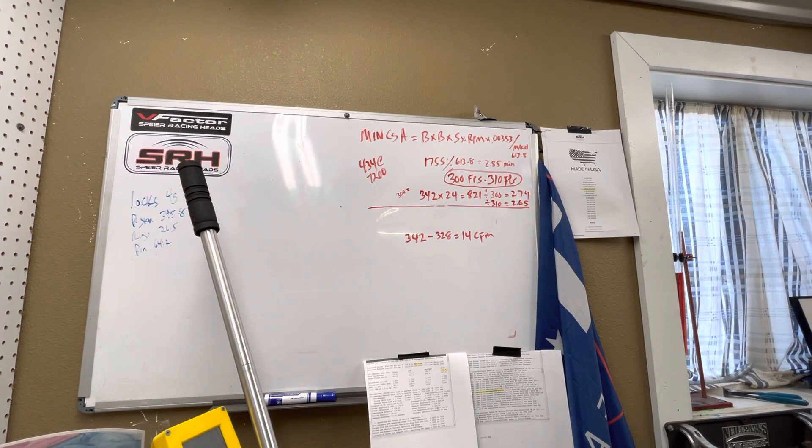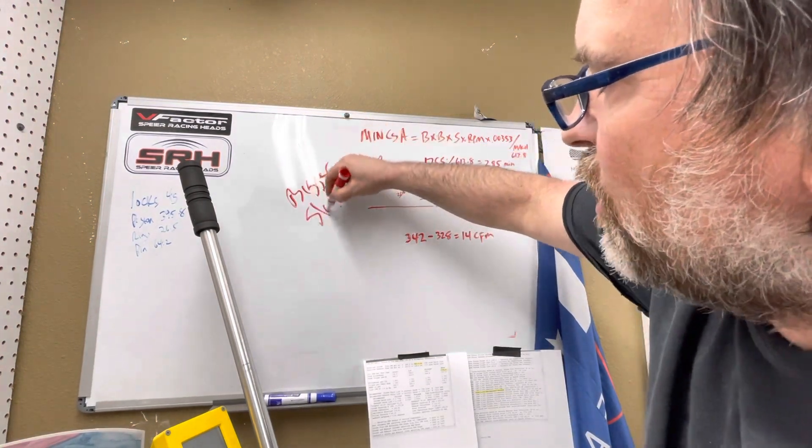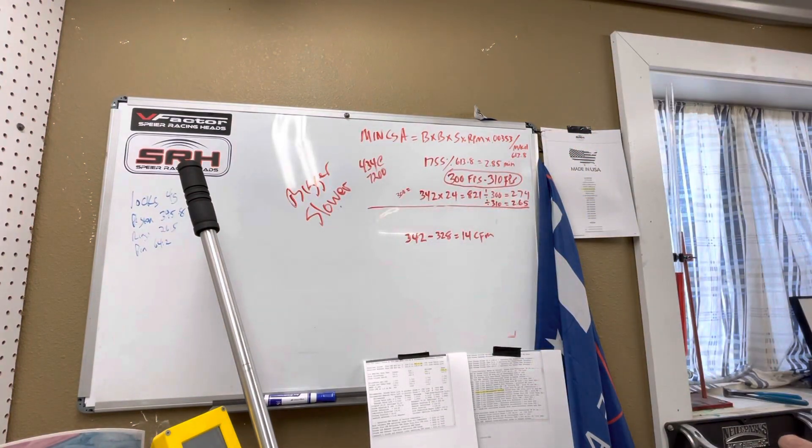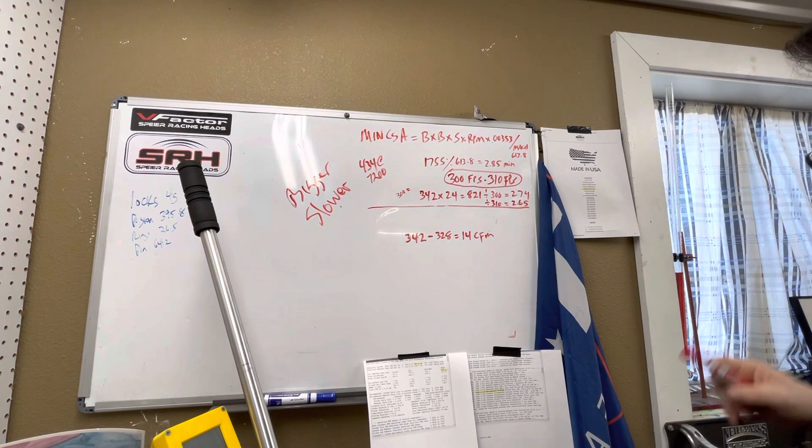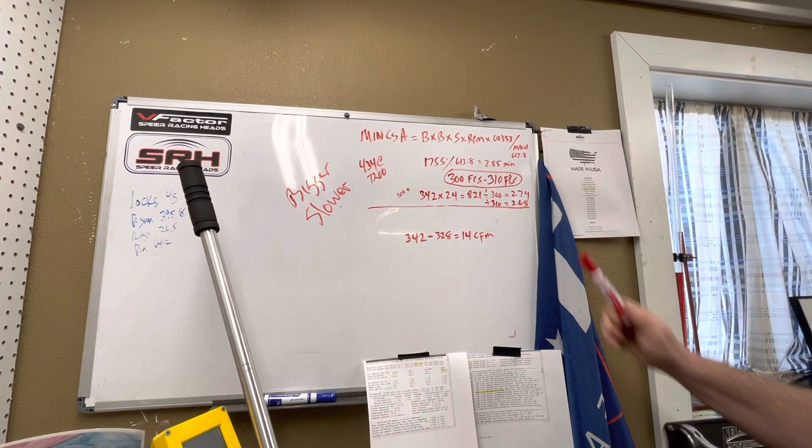Now you got to remember, the bigger the engine, the slower the velocity can be at the minimum. So you've got a small engine, you want smoking fast speed, so that would be bumped up. Or if you want a big 440, that could be even slower.